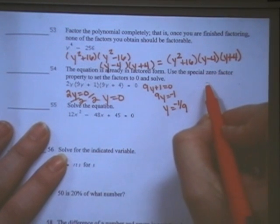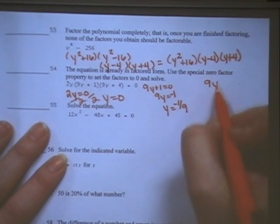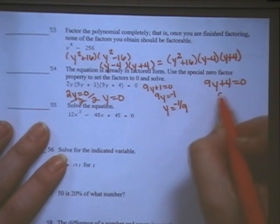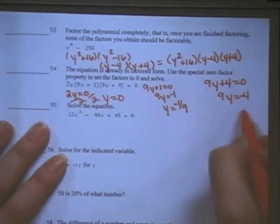And the third factor, 9y plus 4, set that equal to 0, move the 4 over, 9y is equal to negative 4, divide by 9, and y is equal to negative 4 ninths.